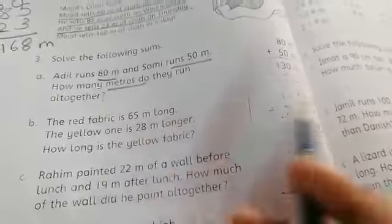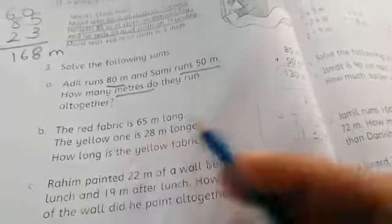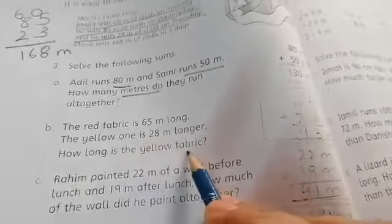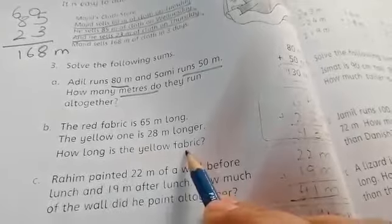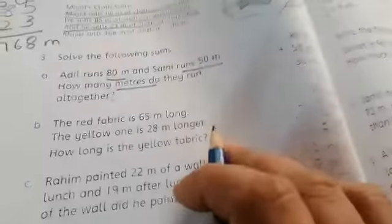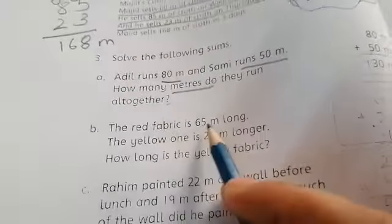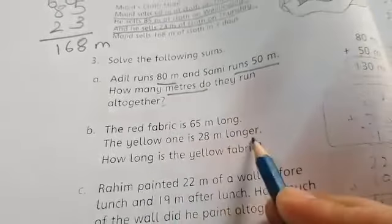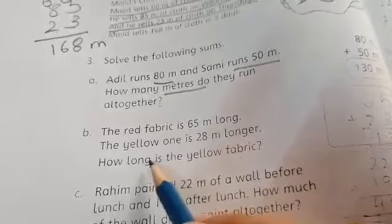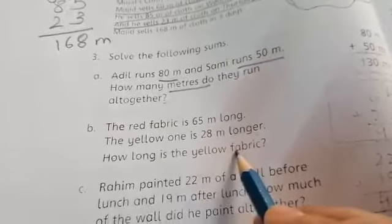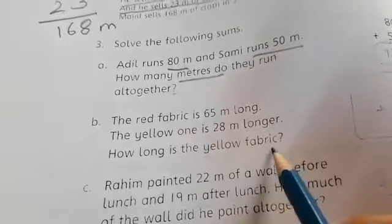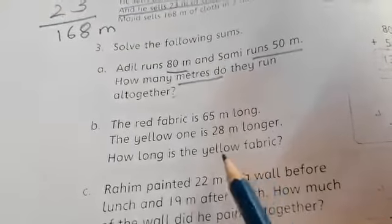The red fabric is 65 meter and the yellow fabric is 28 meter. How long is the yellow fabric? We have to find the yellow fabric length. The red fabric is 65 meter and the yellow one is 28 meter. The yellow fabric is 28 meter long, as we can see.